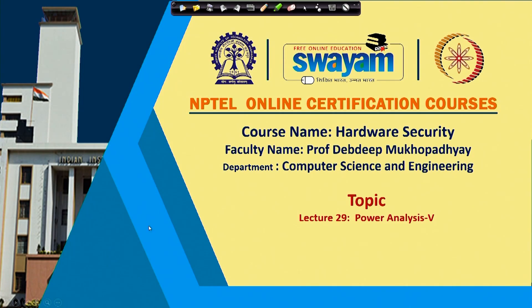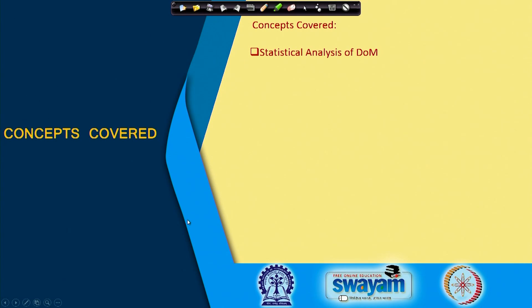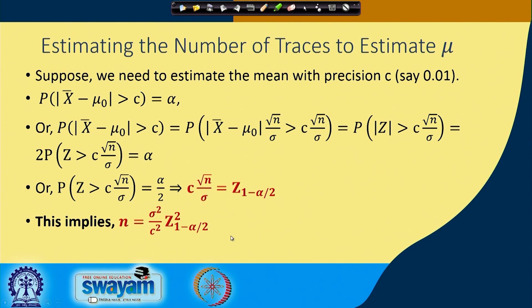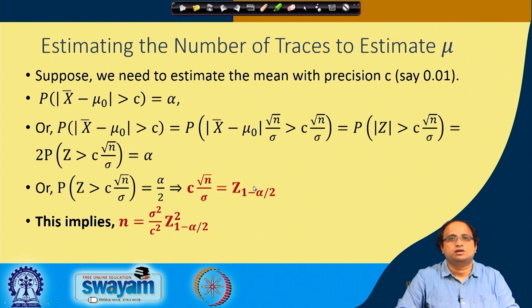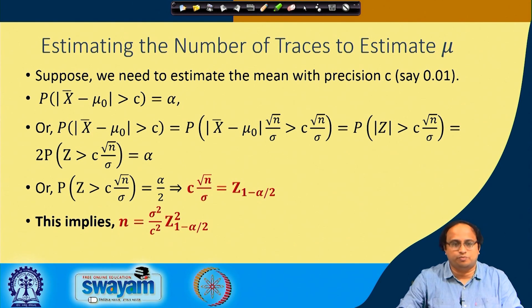Welcome to this class on hardware security. We shall be continuing and finishing our discussion on how to guess or estimate the number of power traces to estimate the statistical parameters which are required for a difference of mean attack. We were basically trying to estimate the number of observations which are required to estimate mu properly.